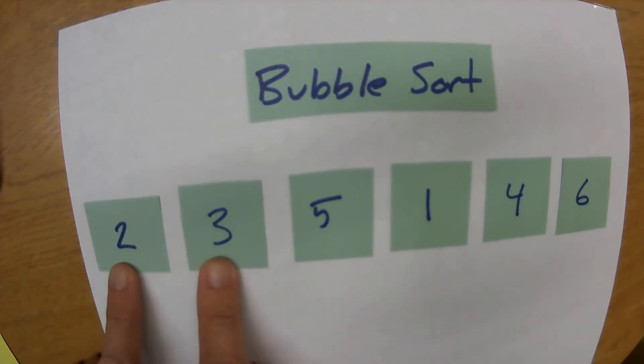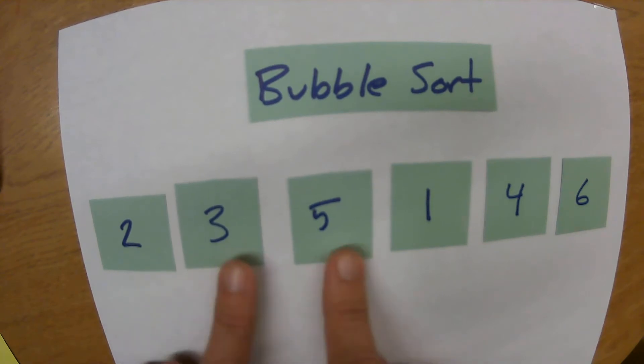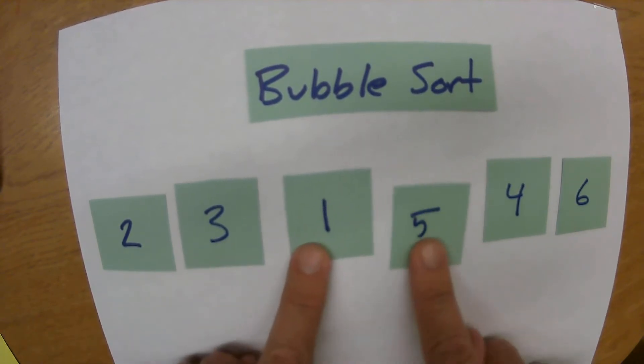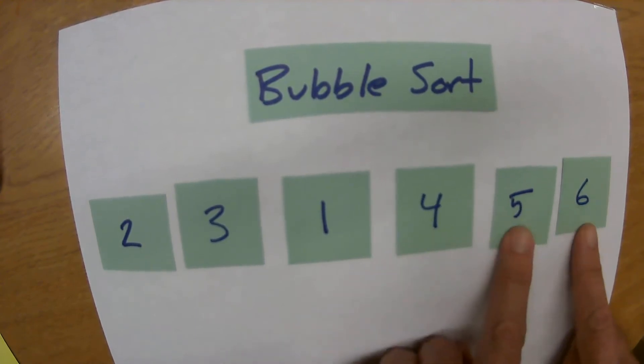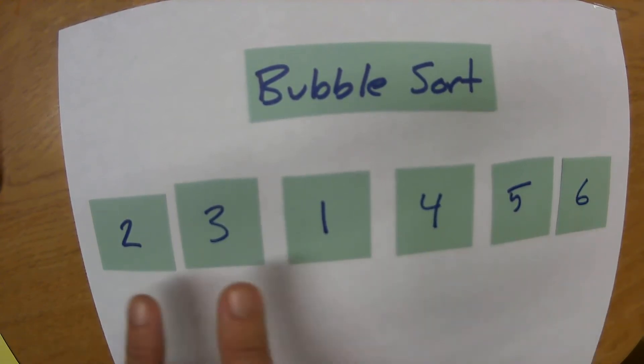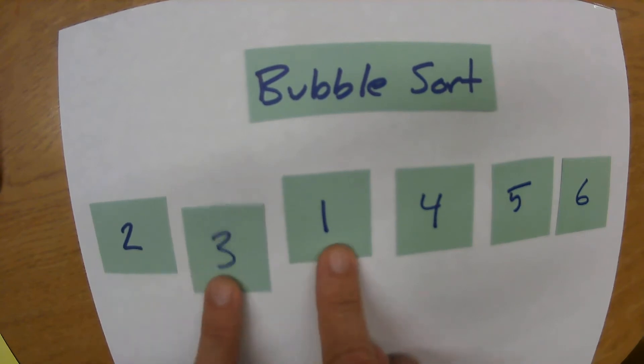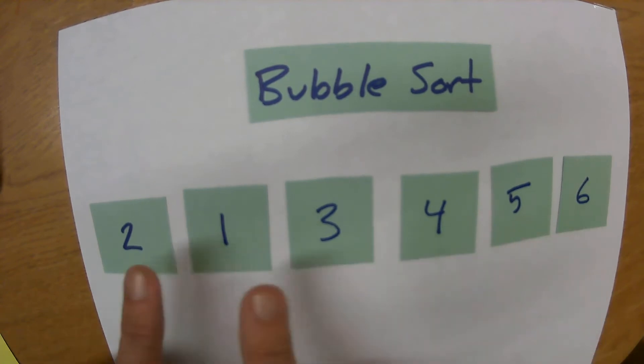And then once you do that you just start over again comparing adjacent elements. These are okay and these are okay, these are incorrect. Move to the next two, these are incorrect so we swap them and these are correct. Go back to the beginning and that's correct, those are incorrect, and these are correct, these are correct, and these are correct.